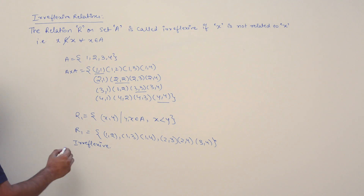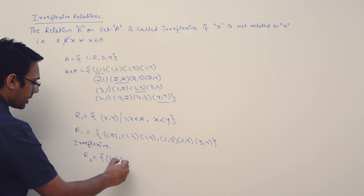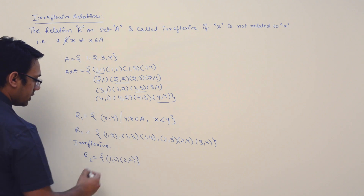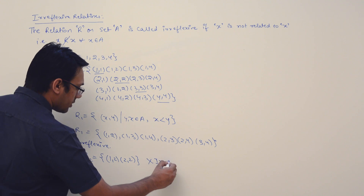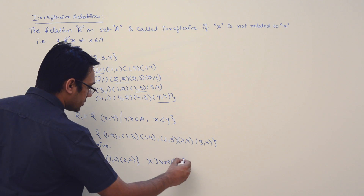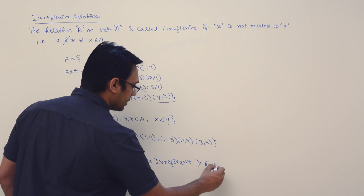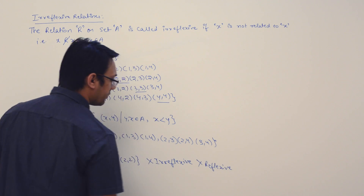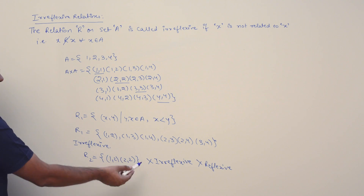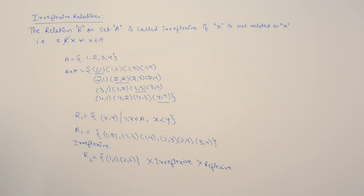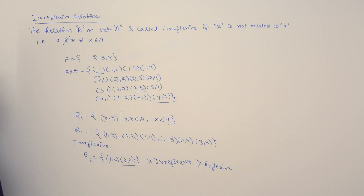Assume we have relation R2 = {(1,2), (2,2)}. This relation is neither irreflexive nor reflexive. It is not reflexive because it does not contain the pairs (1,1), (3,3), and (4,4). It is not irreflexive because it contains the pair (2,2).